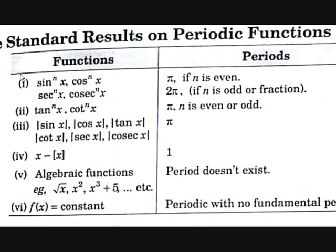For sin^n(x), cos^n(x), sec^n(x), and csc^n(x): the period is π if n is even, and 2π if n is odd. If raised to an even power, all negative values become positive, so the function repeats over π instead of 2π.